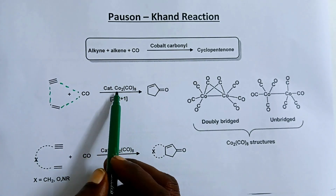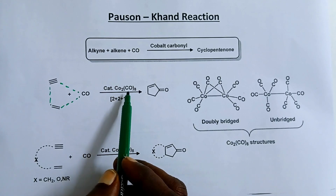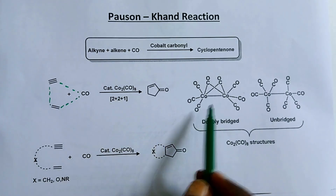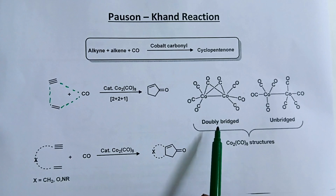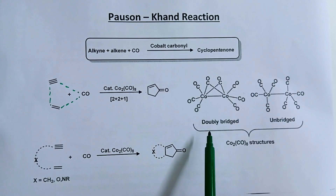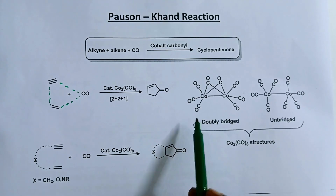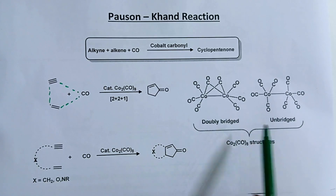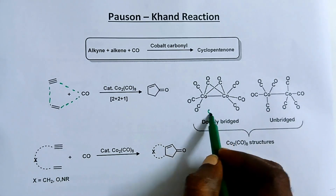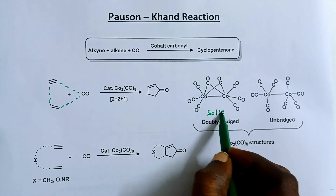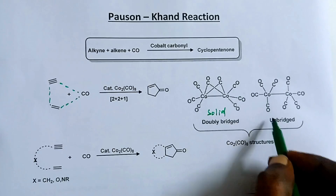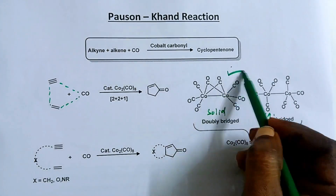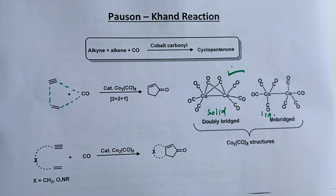The catalyst is dicobalt octacarbonyl. You might have studied this carbonyl in metal carbonyls in organometallic chemistry. This is an 18-electron species. There are two structures — one is doubly bridged and the other one is unbridged. The bridged form is a solid and the unbridged form is a liquid. This is the reagent that we use.